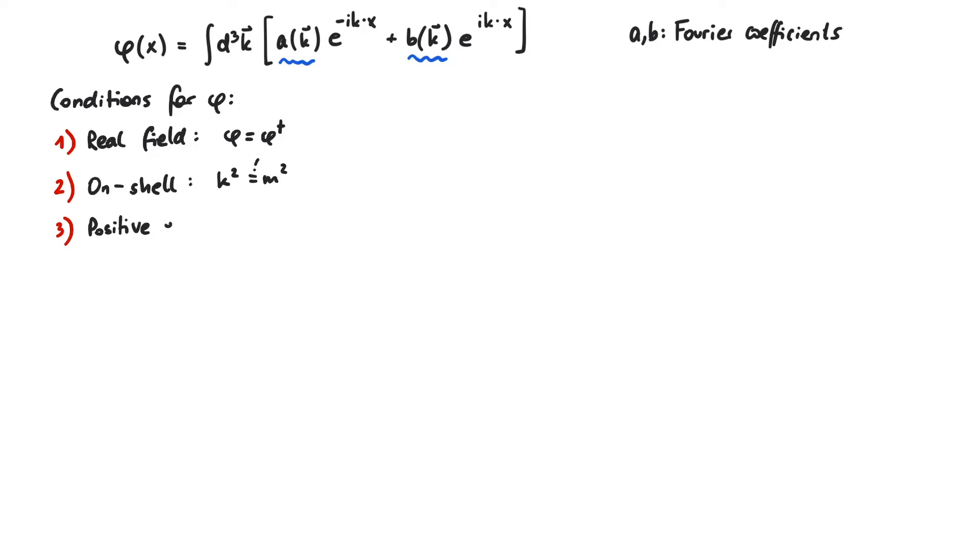Remember that we got two solutions for omega earlier in the video. Well, from now on we only want the positive solution. Condition 1 implies that the Fourier coefficients, which we call b, are actually the complex conjugated versions of a, so let's write them as a star. Conditions 2 and 3 together imply that we should add some terms to the integration measure d3k. This gets usually abbreviated by dk tilde and is now Lorentz invariant.